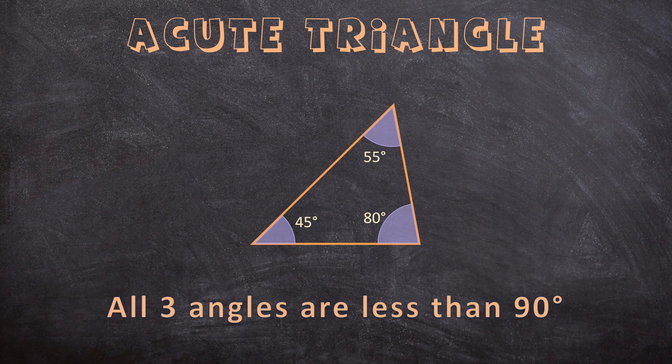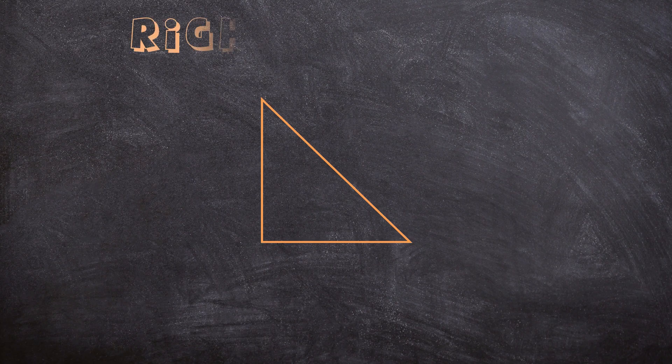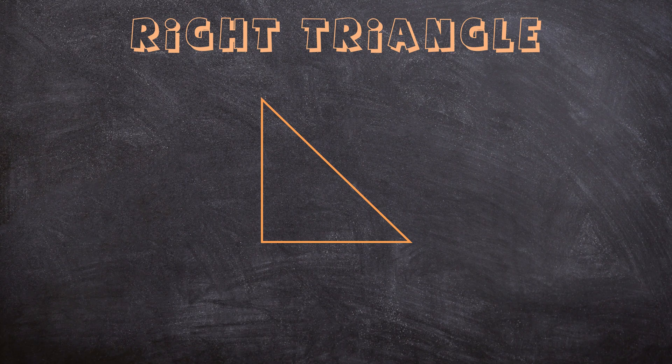Now let's look at the next triangle. This is a right triangle, and this type of triangle has one 90-degree angle.